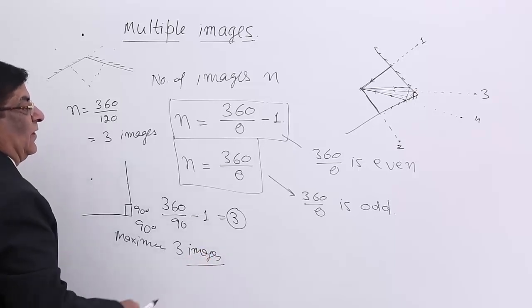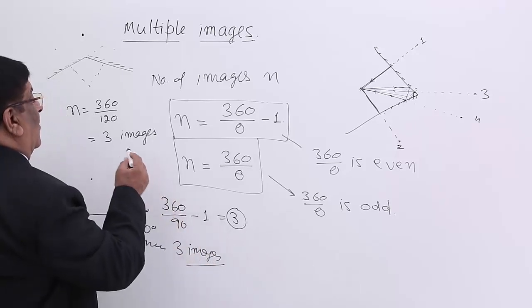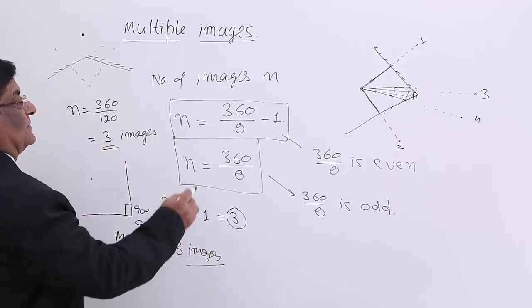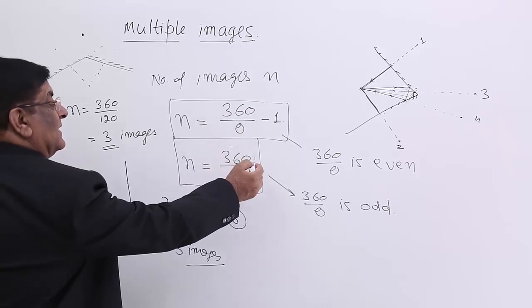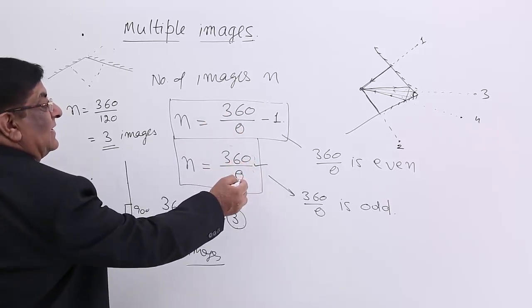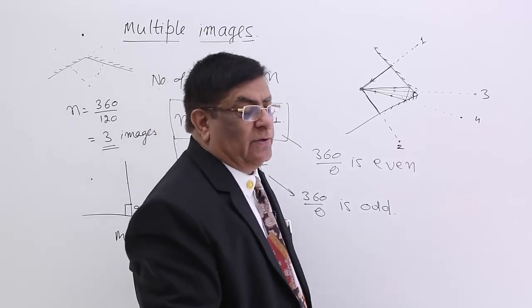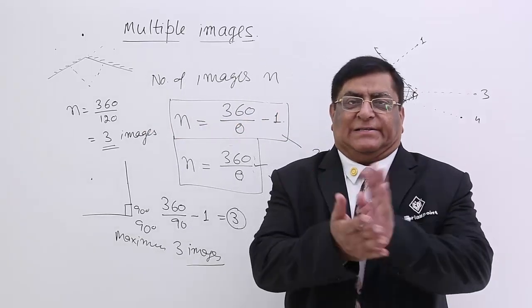So please remember this formula. The number of images will always be odd, they will never be even, and they are controlled by this formula. If this odd number comes, it is fine. If this is an even number, then please decrease it by 1. So that is the multiple images what we can see by this angle.